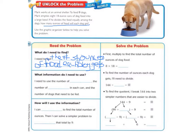So the second question under read the problem is what information do I need to use? And I need to use the number of cans of food. So we're going to write that in the first blank. And I need the number of ounces in each can and the number of dogs that need to be fed. So let's write ounces in the second blank.